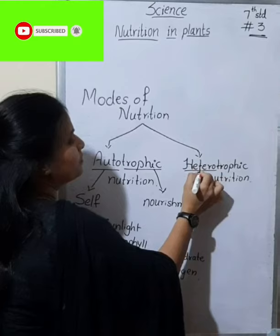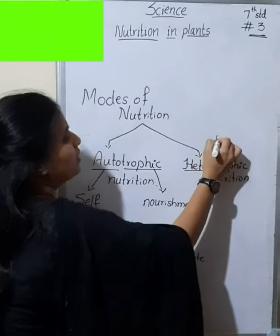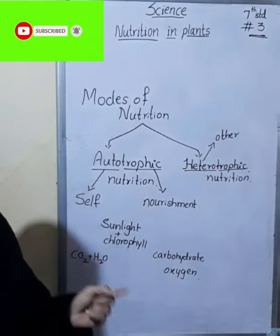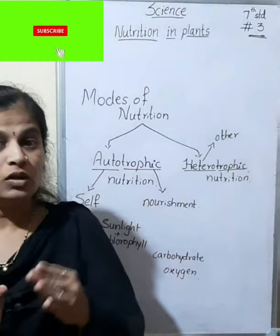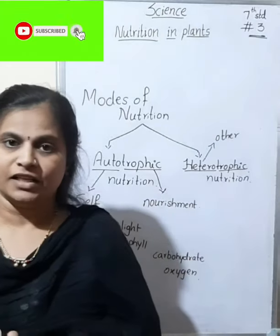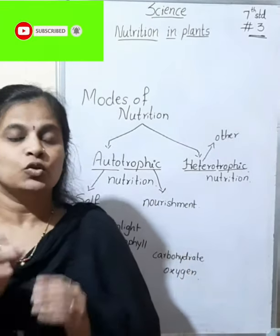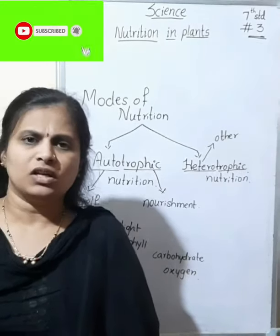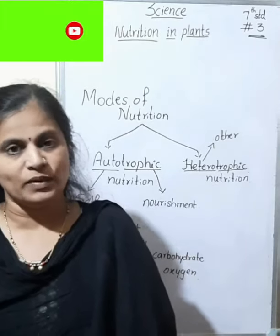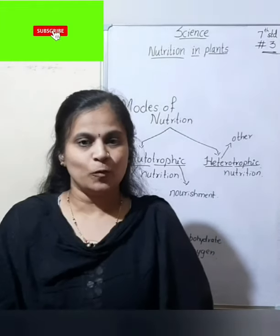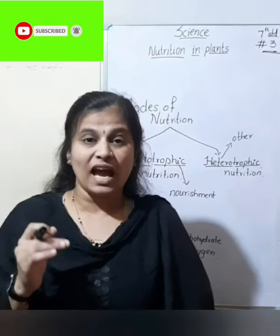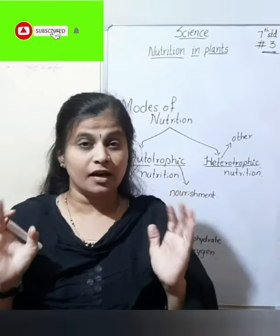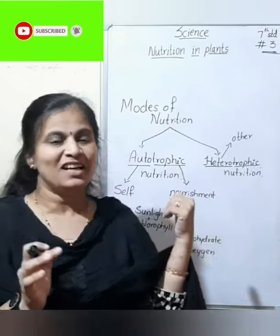Hetero means other, trophos means nourishment. So here, organisms depend on others for their nutrition — for their food. Those organisms are called heterotrophs. Let's deal with heterotrophic mode of nutrition. In this, organisms completely depend on others for their food; they take ready-made food which is prepared by autotrophs.